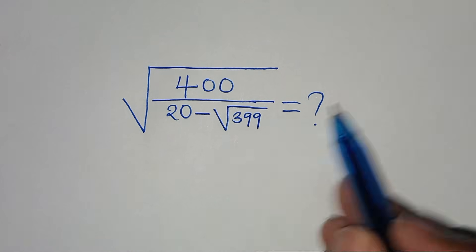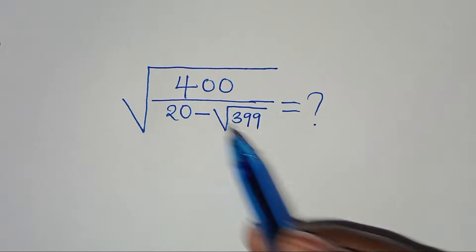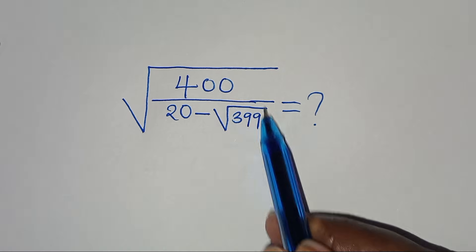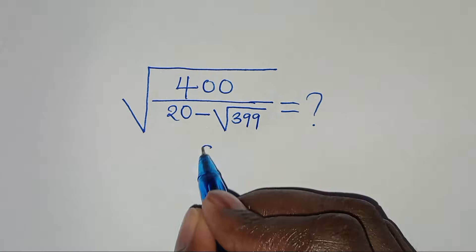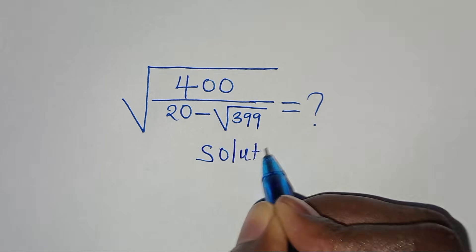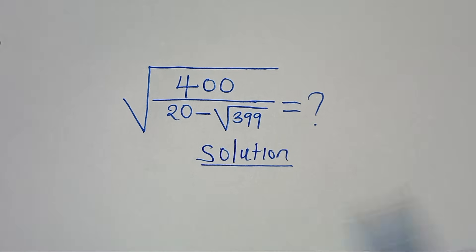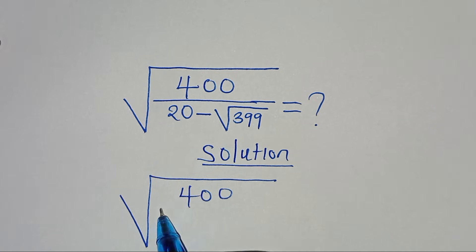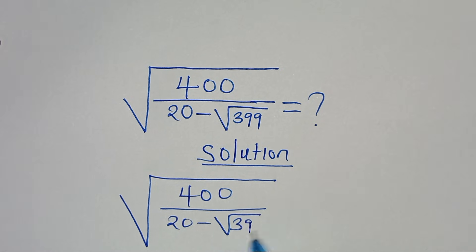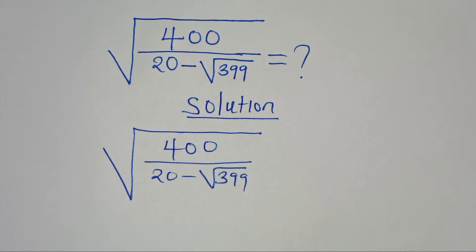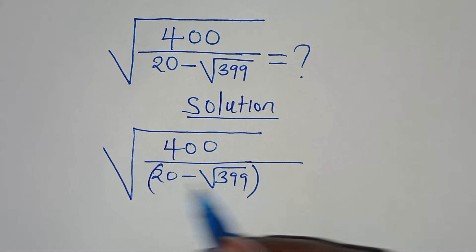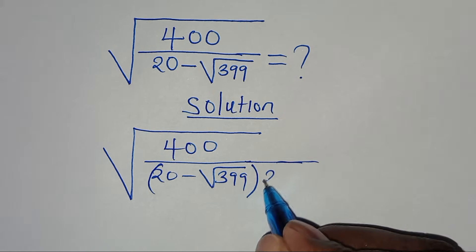Hello everyone, you're welcome to solve this nice square root math problem, which is the square root of 400 divided by 20 minus the square root of 399. So let's provide a solution. We have the square root of 400 divided by 20 subtract square root of 399. The first step is to rationalize the denominator by introducing a conjugate.